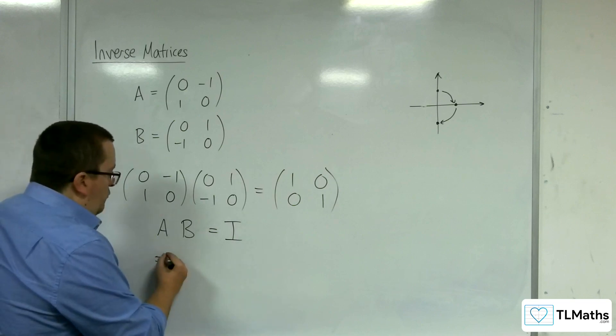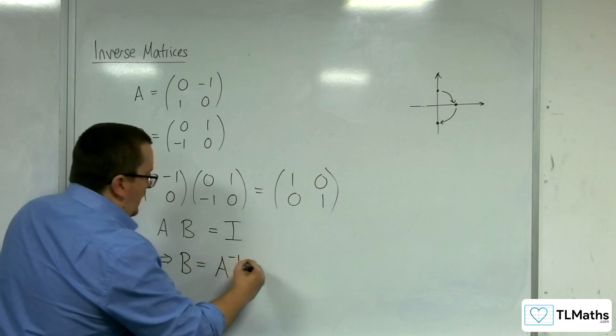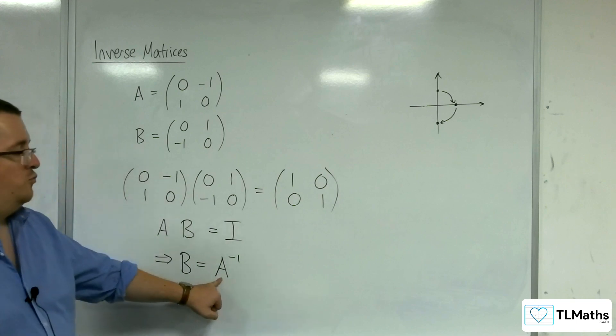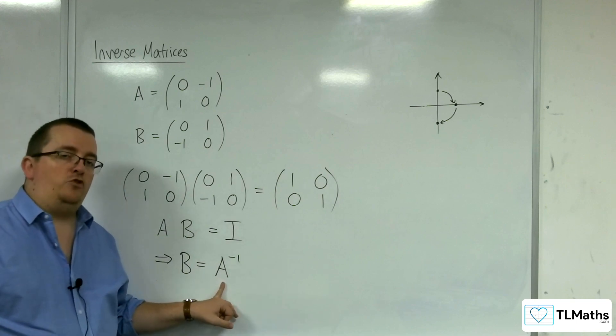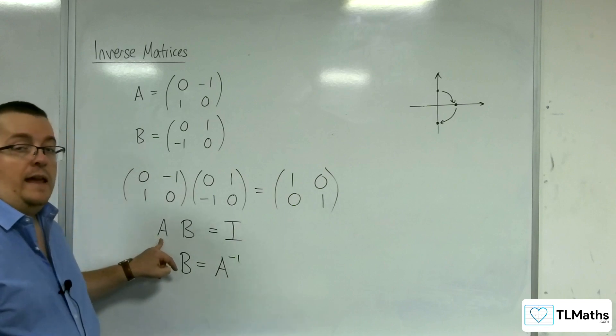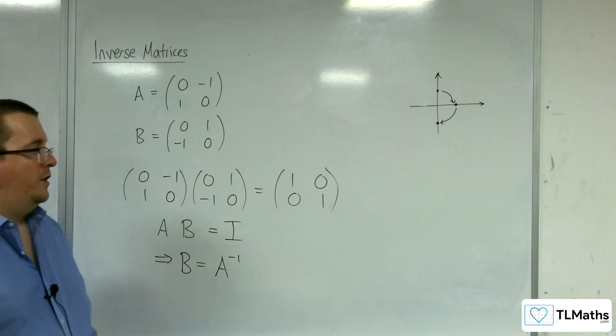then that means that A and B are inverse matrices of one another. And we are able to then write that B is A to the minus 1. This is the notation we use to represent the inverse matrix of A. Likewise, you could say that A is B to the minus 1.